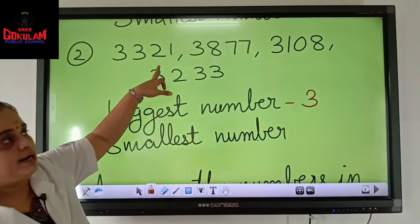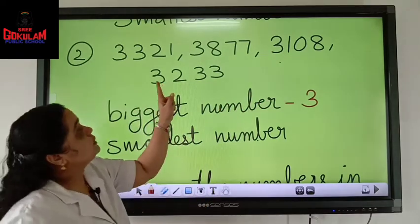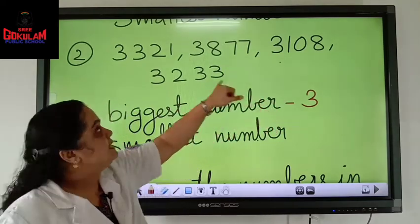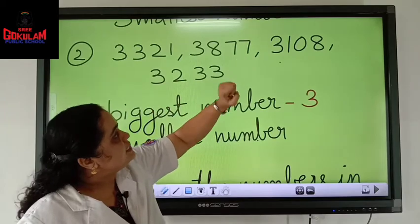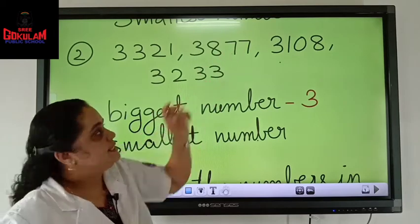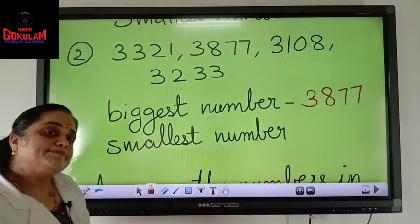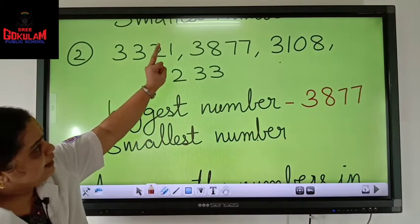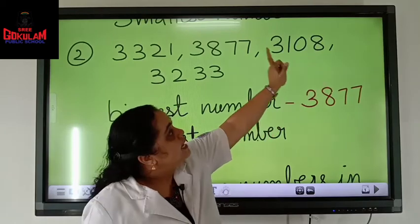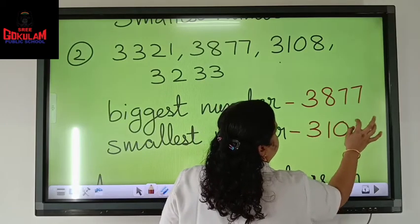Now here we have 3321, 3877, 3108, 3233. The thousands digit 3 is common in everyone, so I look at the hundreds place: 321, 877, 108, 233. Which is bigger? 877. So the biggest number is 3877. And the smallest — 108 is the smallest. Along with that, we have 3 also, don't forget that. So you will get 3108.